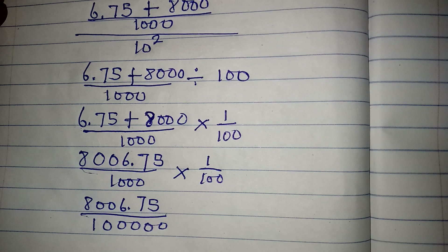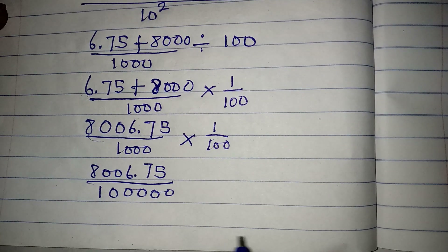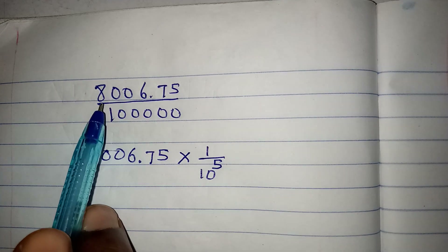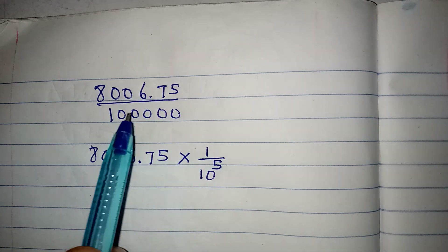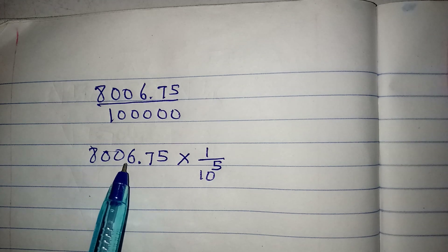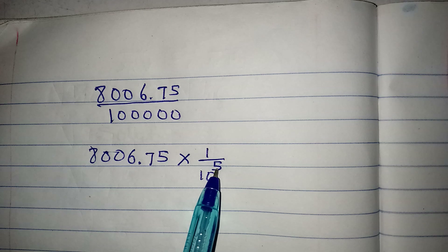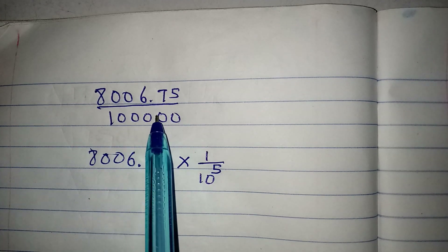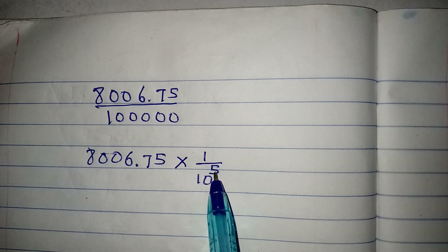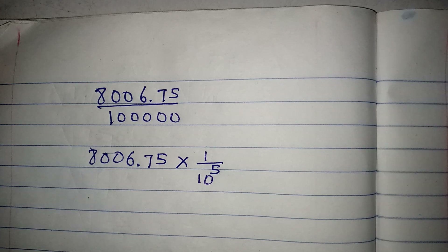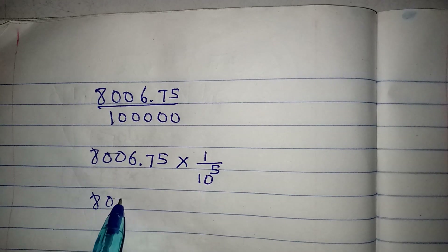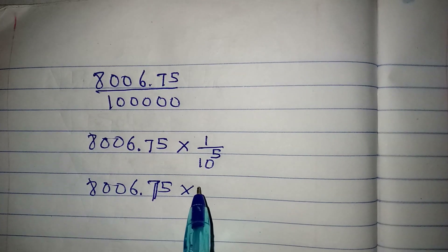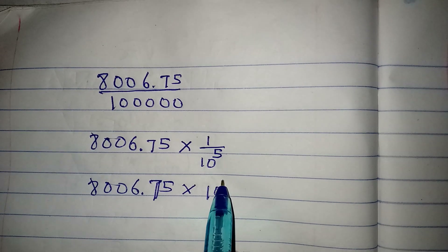We can rewrite this as 8006.75 times 1 over 10 to the power of 5, since 100,000 is 10 to the power of 5 — one, two, three, four, five. The five is the exponent for 10. Converting the fraction, 1 over 10 to the power of 5 becomes 10 to the power of negative 5.